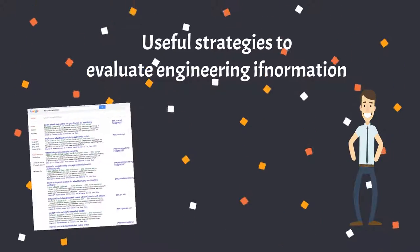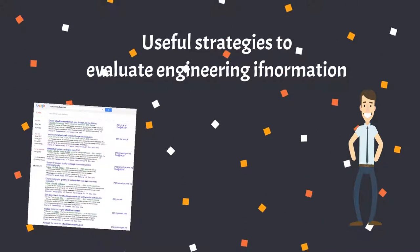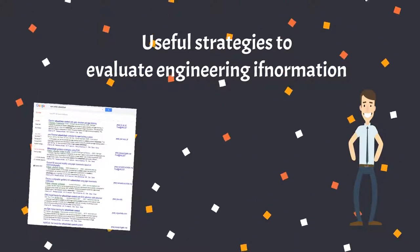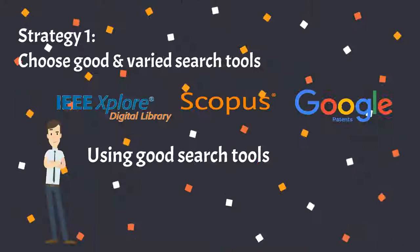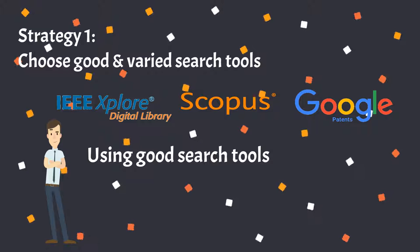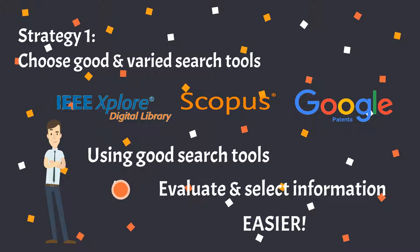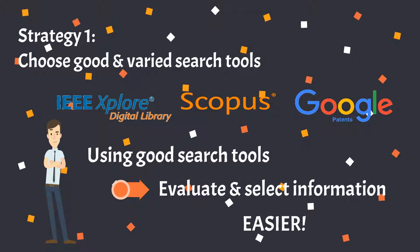Learning to be strategic when you evaluate engineering information, and find what's right for you at the right time. In the last module, you learned about different engineering search tools. Using good search tools will make evaluating and selecting information easier, and will help you reduce the number of irrelevant or unrelated results.